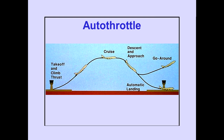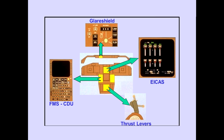The autothrottle is a full-time system which can be operated from the start of the takeoff roll through an automatic landing or go-around. Autothrottle controls and indicators are located on the glare shield, FMS-CDU, ICAS, and thrust levers.